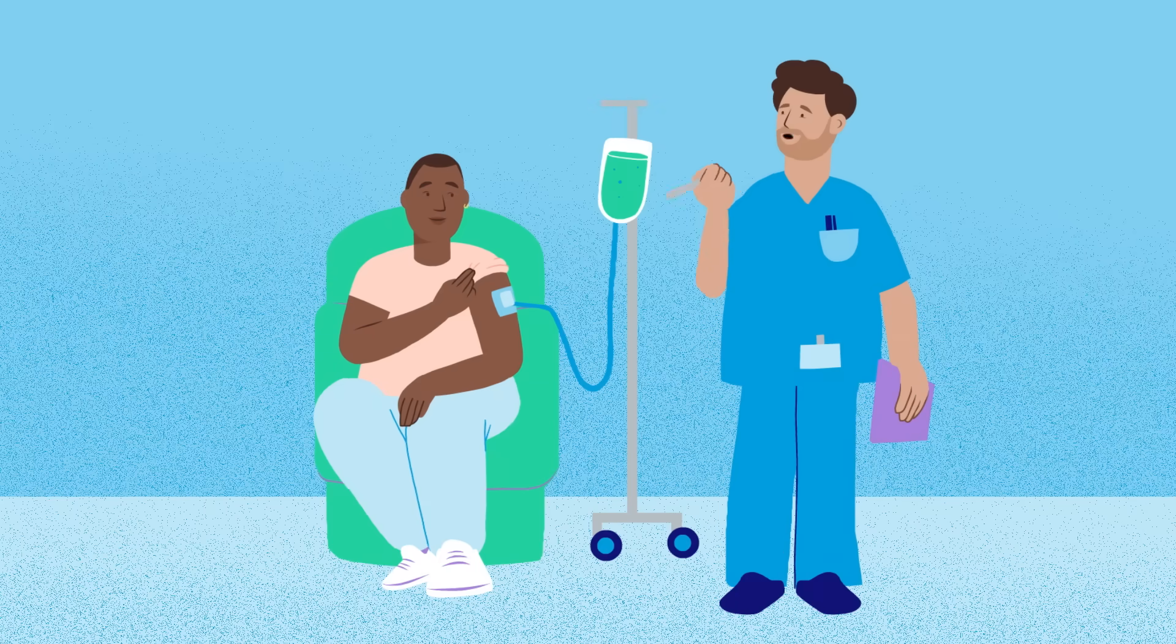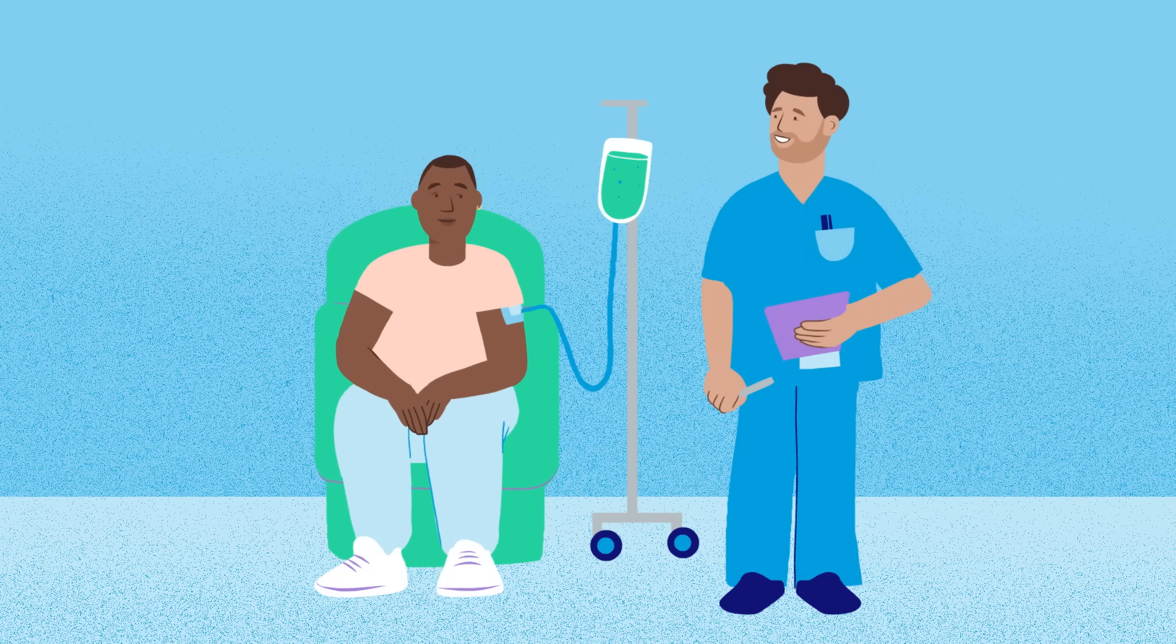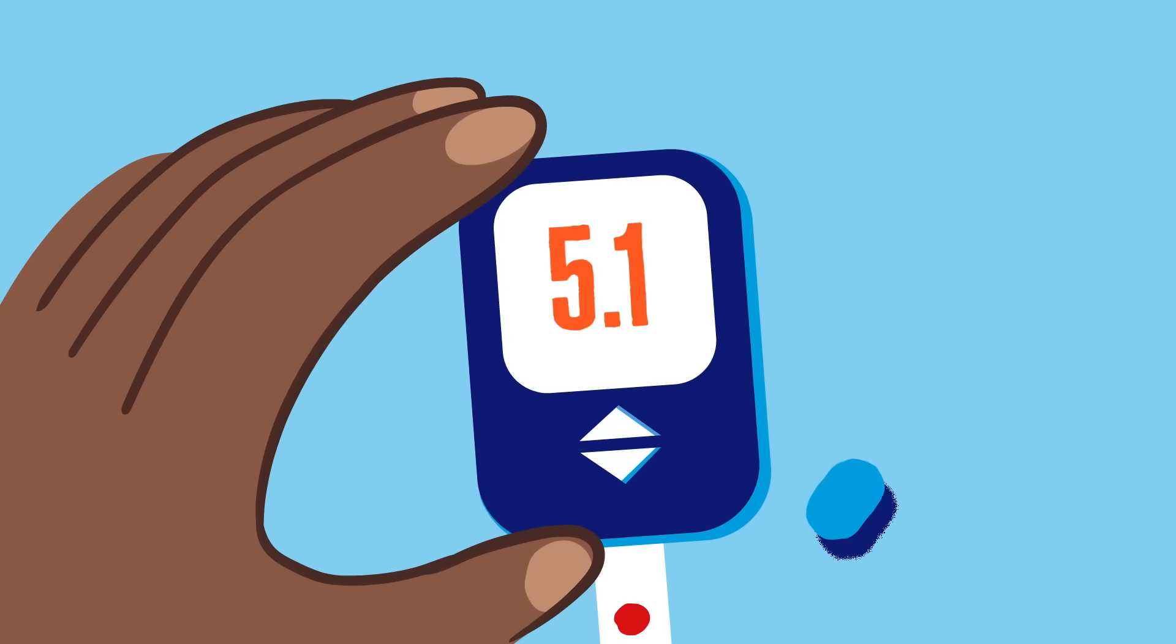We could give an immunotherapy here to stop the immune attack in its tracks and preserve his surviving beta cells. The more beta cells that survive, the more insulin Zach can produce, which can have huge benefits, making blood sugar easier to manage and reducing the risk of diabetes-related complications later in life.